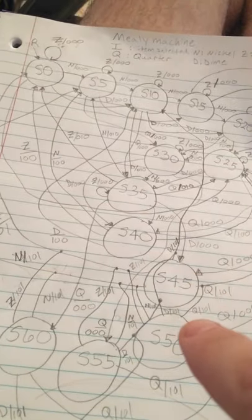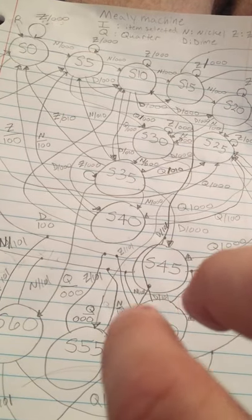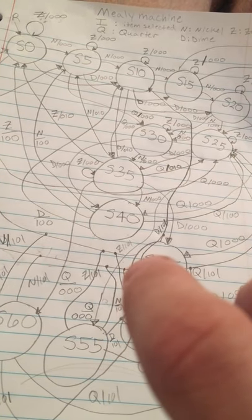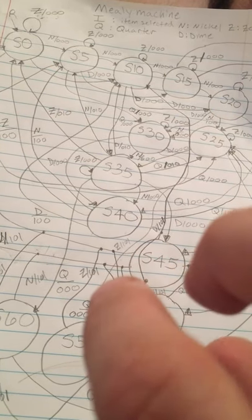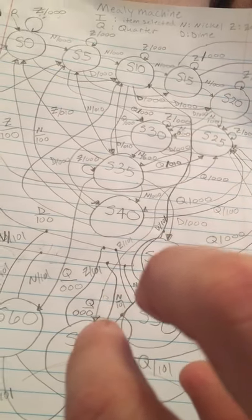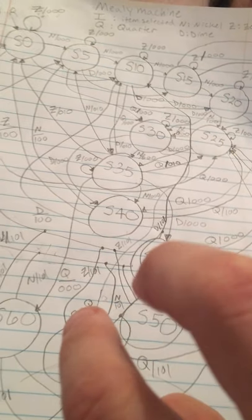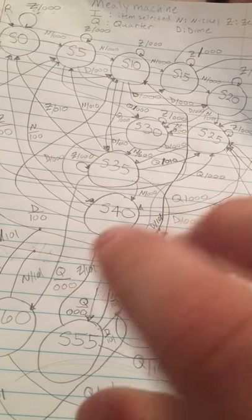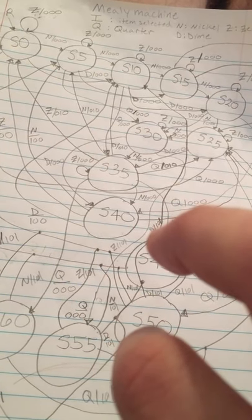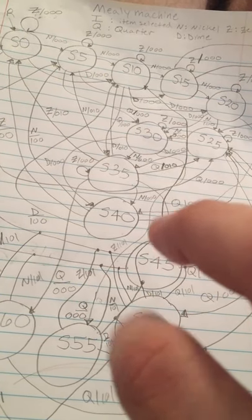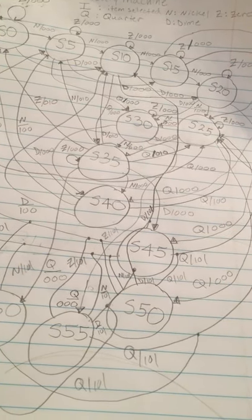Going down the line to states fifty, fifty-five, and sixty, the inputs and next states are similar whether item one or item two is selected. And this is it for my video. Thank you.